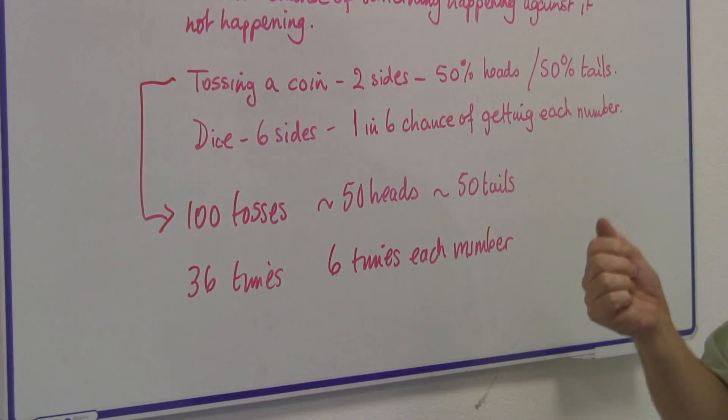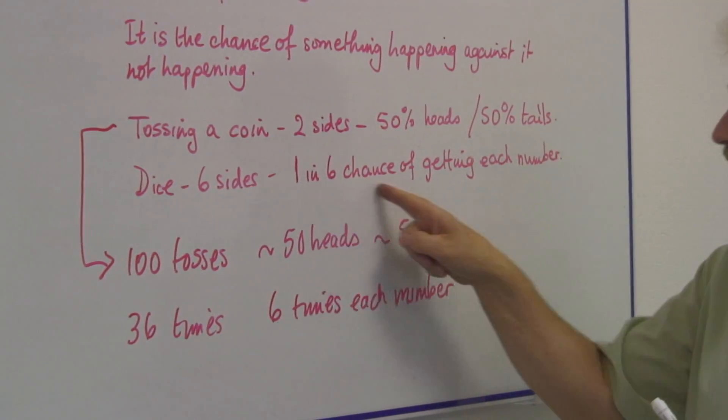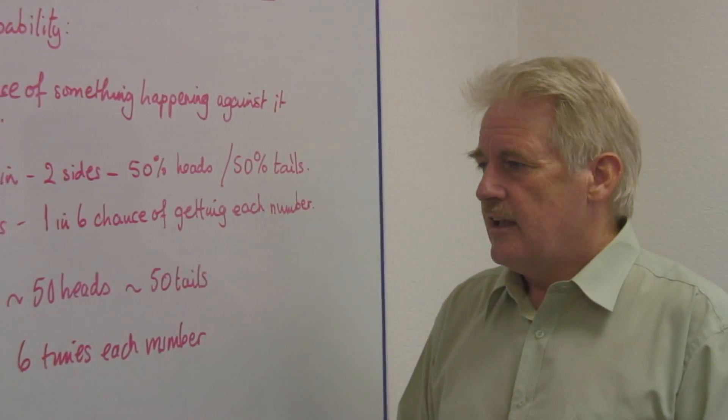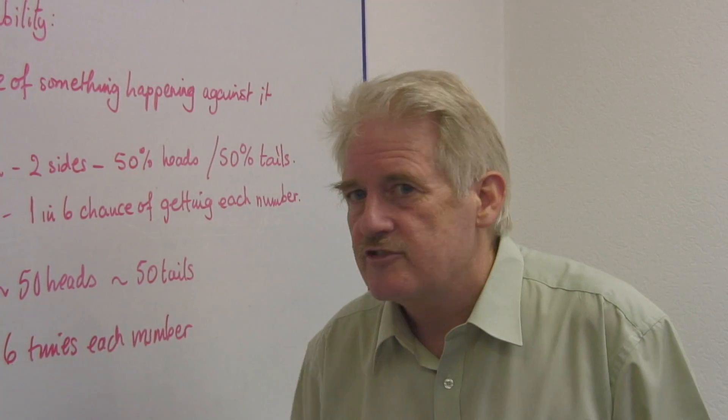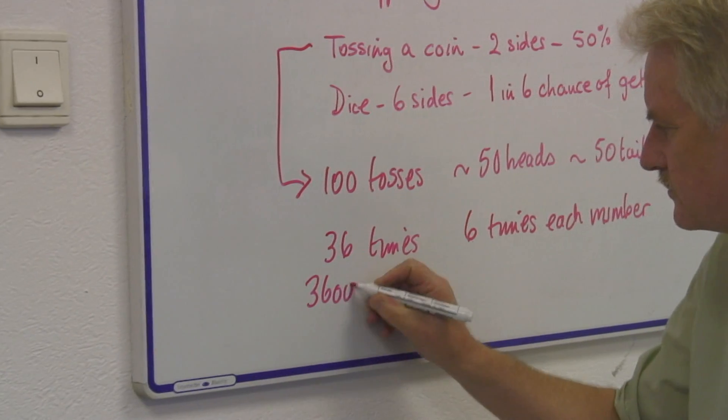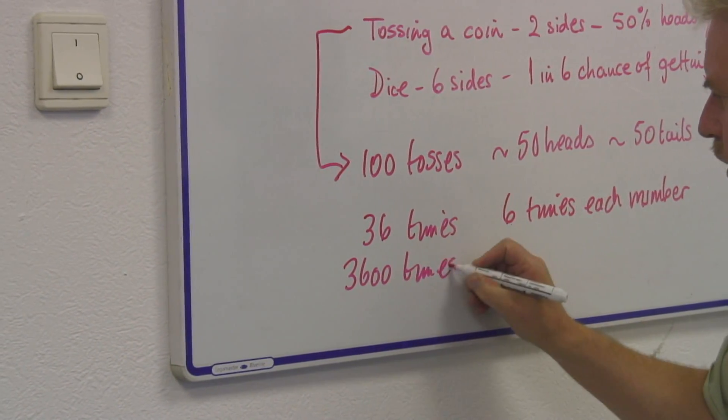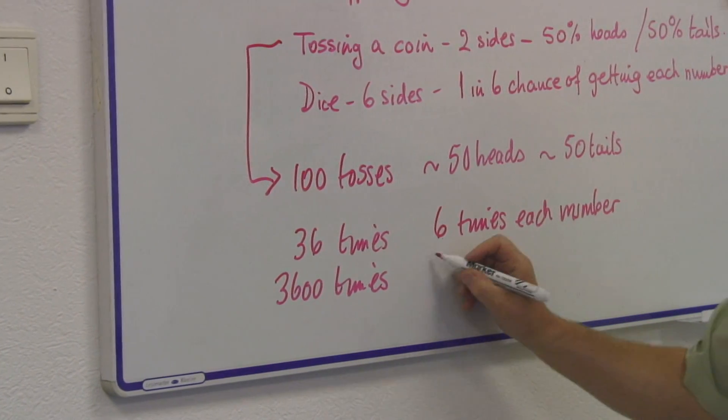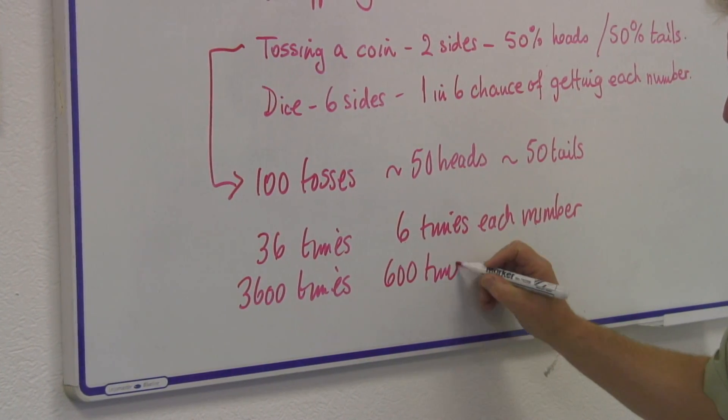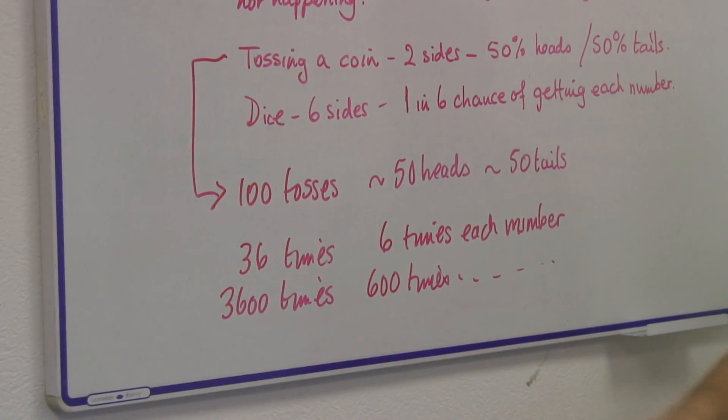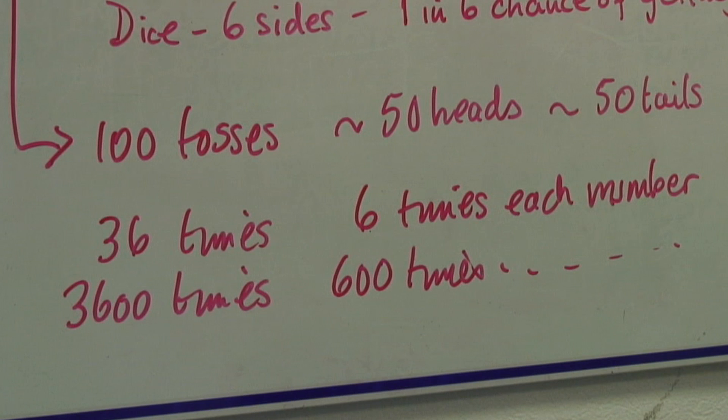And each time I toss it, there is still a one in six chance of landing on each number. If I tossed it 3600 times instead, almost certainly, instead of six times each number, it should be 600 times each number. And in this situation, I would expect it to be very close to 600 for each of those numbers.